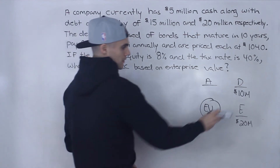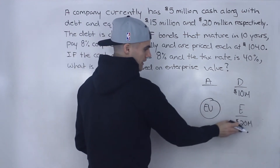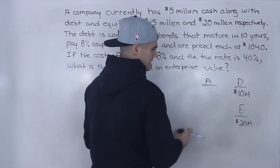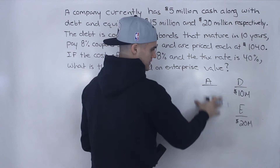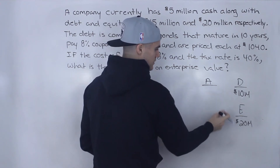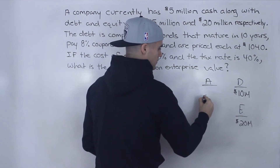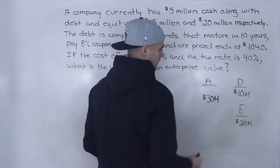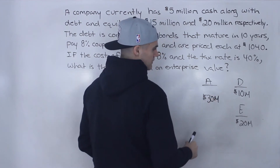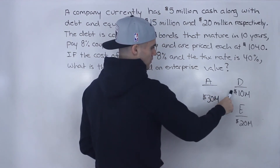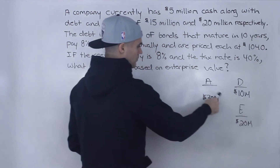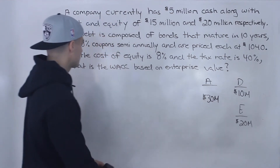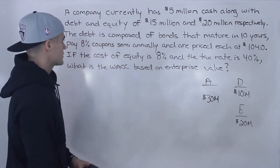That's the balance sheet we're going to use to calculate the weighted average cost of capital. With the new debt and equity, the asset side of the balance sheet is just 10 plus 20, which is $30 million. So we have the market value of debt and the market value of equity.